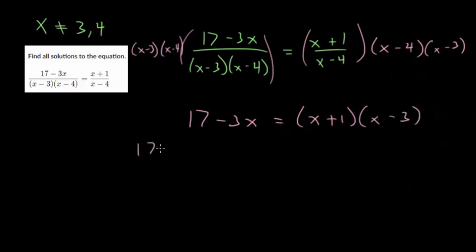Now we just need to simplify. Let's multiply out those binomials: x squared minus 3x plus 1x minus 3. We have a quadratic, so let's set one side equal to zero. Let's subtract 17 and add 3x. We get x squared, the 3x will actually cancel, and we have this plus x. We're also subtracting 17, so this becomes minus 20.